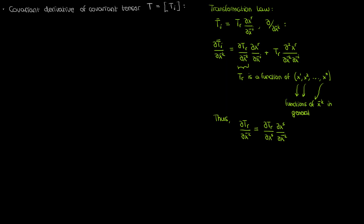By recognizing this, I can rewrite the partial derivative of t sub r as the partial of t sub r with respect to x super s times the partial of x super s with respect to x super k bar, where s is a dummy index being summed over. We are once again in a similar situation as with the contravariant tensor: the simple derivative of a covariant tensor of rank 1 transforms like a covariant tensor of rank 2 only if the mixed partial derivative is 0 — so only for affine coordinate transformations. I'll call this equation 3.